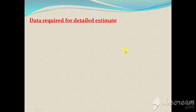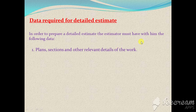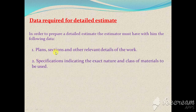Generally, while going for estimating, one should have the data required for the estimate, which is nothing but the plans, sections, and other relevant details of the work. From plans and sections we can get the length, width, and height of the item of work, and from the section we can understand the type of work and the sequence of execution.